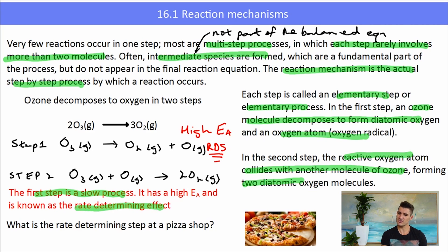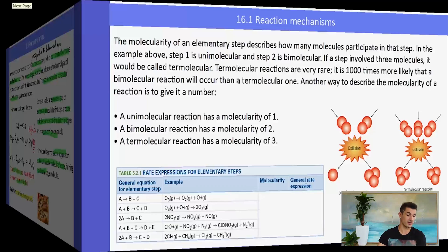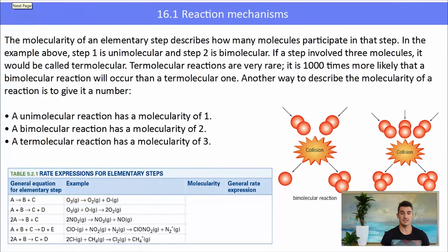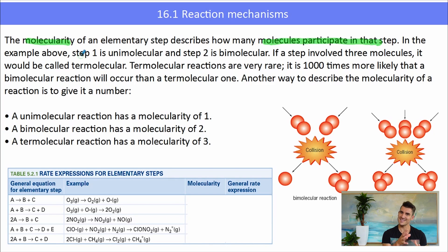Consider a pizza shop — what would the rate determining step be? Well, making the pizzas is pretty quick, but putting them in the oven takes a fair bit of time. The molecularity of an elementary step is how many molecules participate in that step.